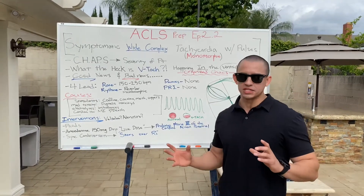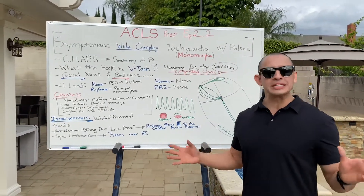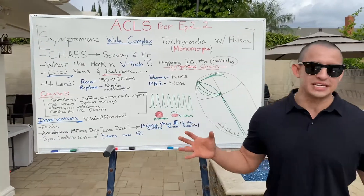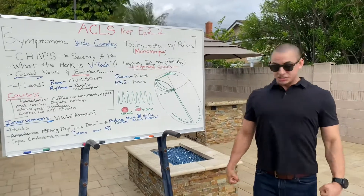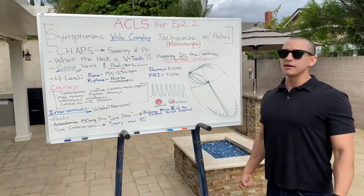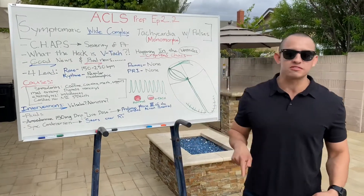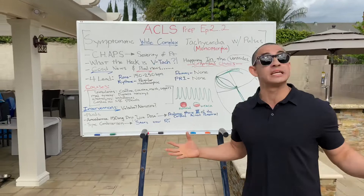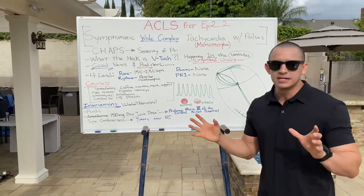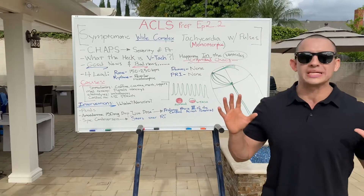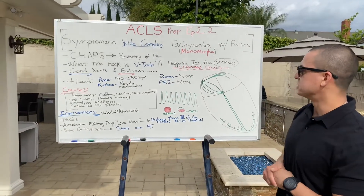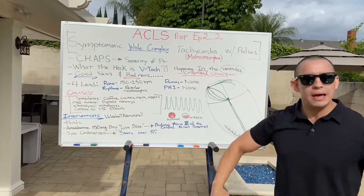Let's break it down. Symptomatic means this patient is showing signs something is wrong. As soon as you get on scene doing your general impression — monitor in one hand, drug box in the other — you're watching the patient from across the room. Are they diaphoretic? Tripoding? Showing signs of shortness of breath? That Levine sign, clutching the chest? These are all symptomatic clues before you've even fully assessed them.